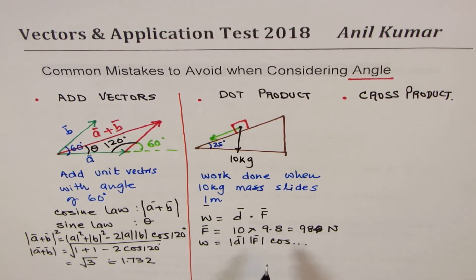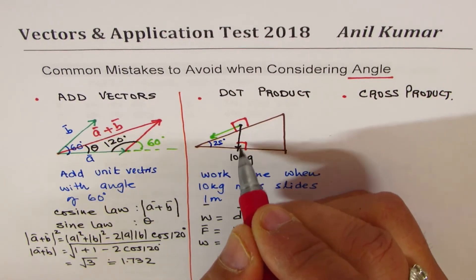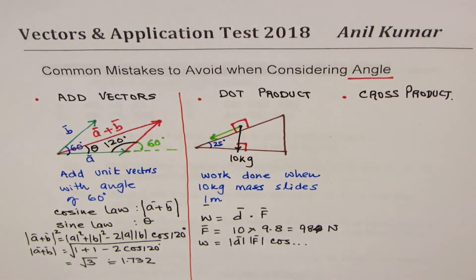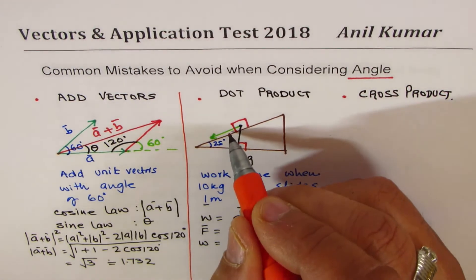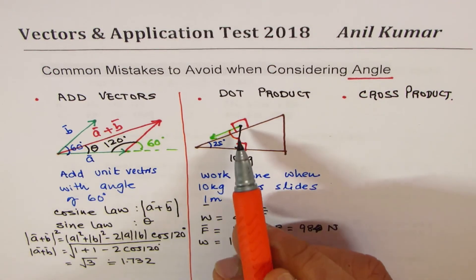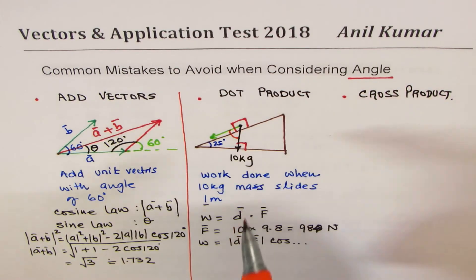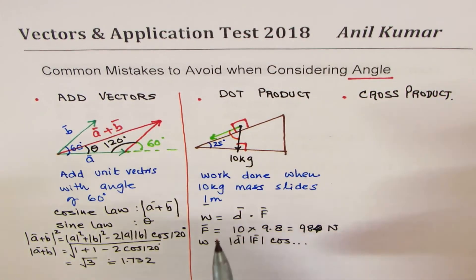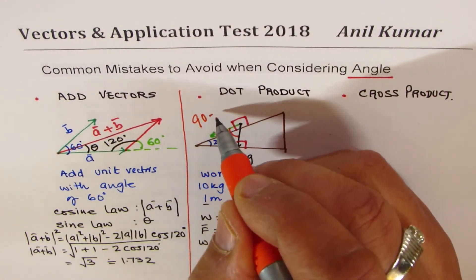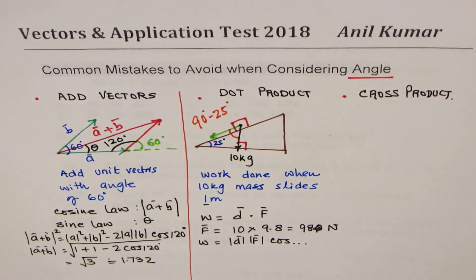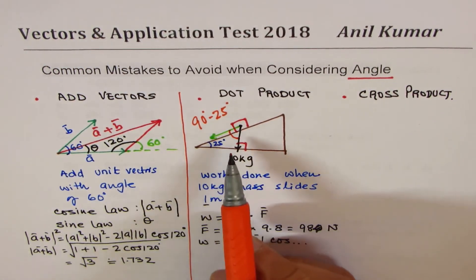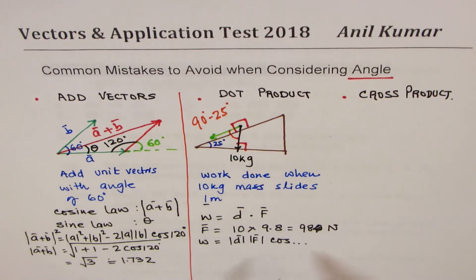Now remember, the angle here is the angle between, so this is going exactly downward. So this is 90 degrees. Do you see that? So the angle is the angle between displacement and force. Now this angle here is what? It is not 25. It is 90 minus 25 degrees. Do you understand? That is what it is. So this is the angle which you have to take.